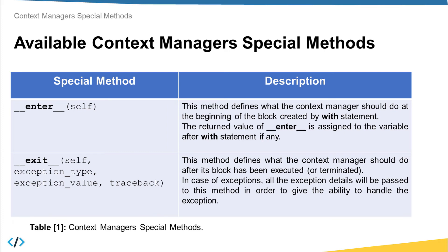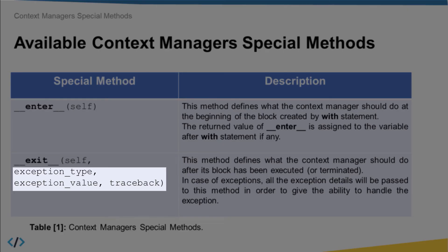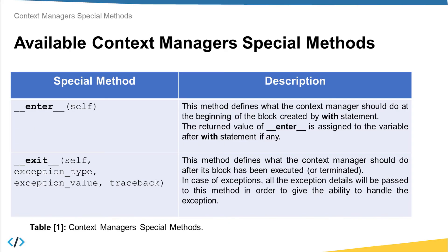The code block could be terminated if an exception happens while executing the `with` statement. When an exception occurs, `__exit__` will receive exception type, exception value, and traceback arguments to know the details of the exception, allowing you as a programmer to handle it. Now let's move to Jupyter Notebook to see some code examples about these context managers.